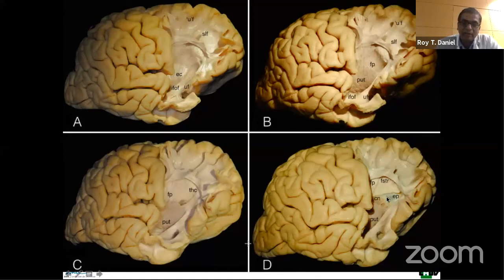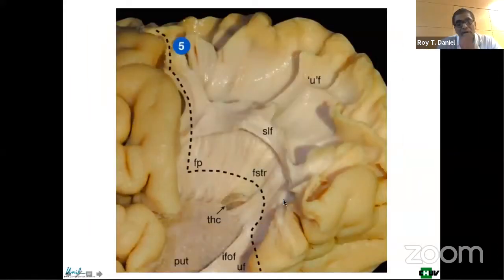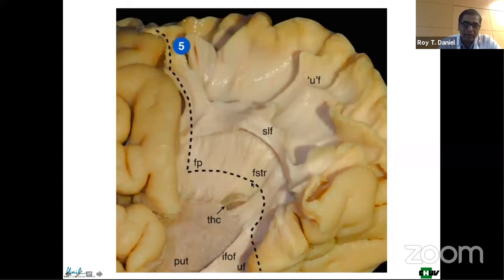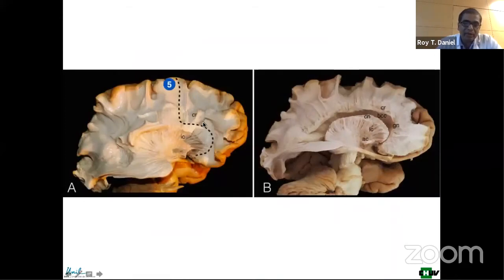When you remove a little bit of the frontostriatal fibers, you see the ependyma of the ventricle. These sequential dissections show you the anatomy of the region. A magnified slice shows you all three components together: the frontal pontine, the thalamocortical fibers with their cross-section, and the frontostriatal. Note that the disconnection goes curvilinear to avoid getting into the anterior part of the putamen and the caudate nucleus. When you cut the internal capsule, it must be cut in a curvilinear manner, and this transition of the corona radiata and the internal capsule is visible.